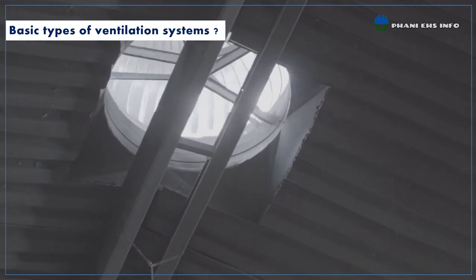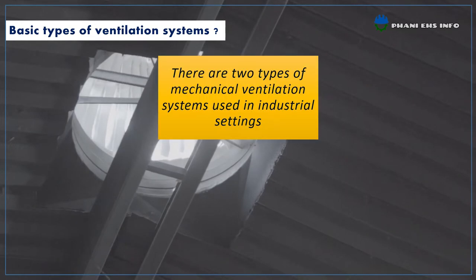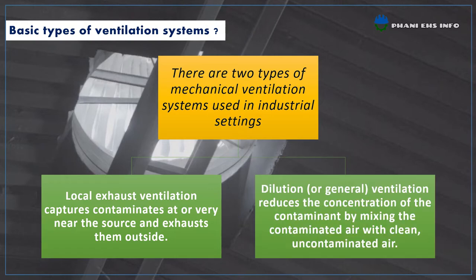Next, basic types of ventilation systems. There are two types of mechanical ventilation systems used in industrial settings. First, local exhaust ventilation captures contaminants very near the source and exhausts them outside. Second, dilution ventilation reduces the concentration of contaminants by mixing contaminated air with clean, uncontaminated air.